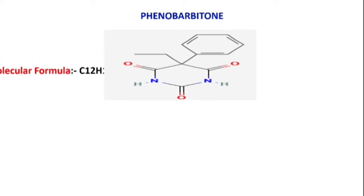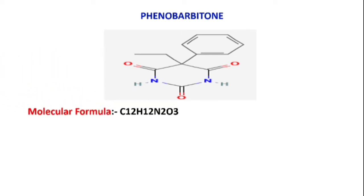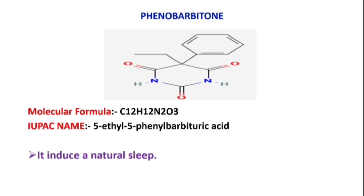The molecular formula of phenobarbital is C12H12N2O3. The IUPAC name of phenobarbital is 5-ethyl-5-phenyl barbituric acid. The main action of phenobarbital is to induce natural sleep, and it is used for withdrawal of jaundice.